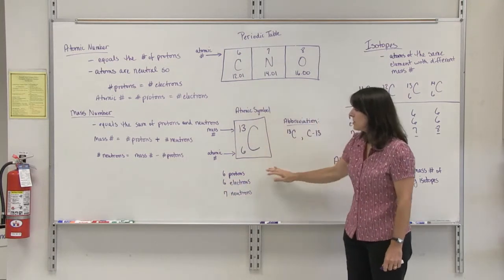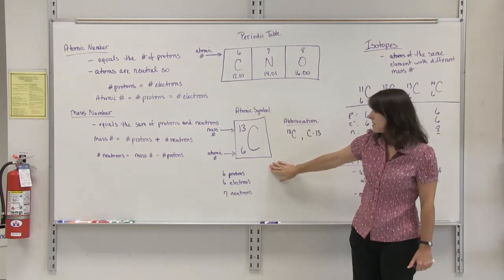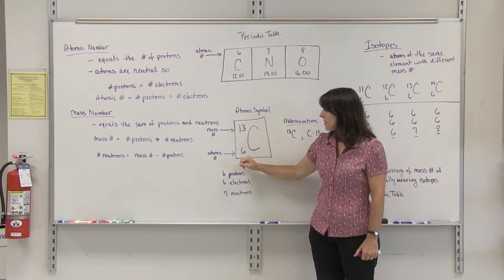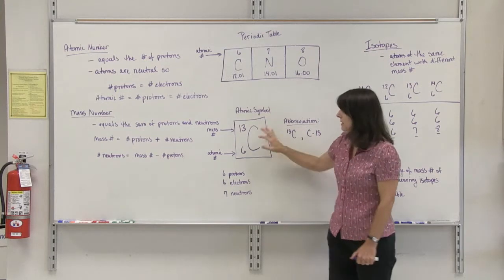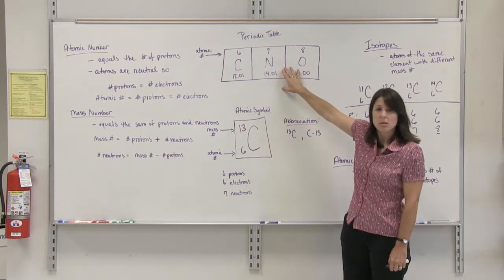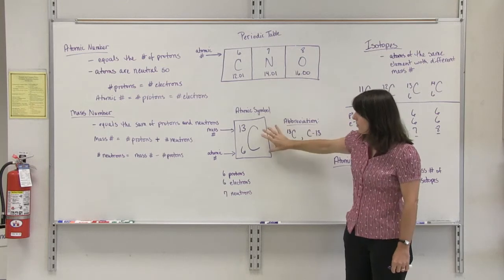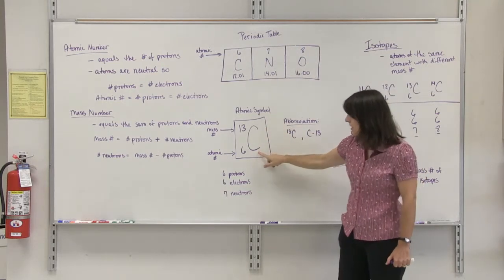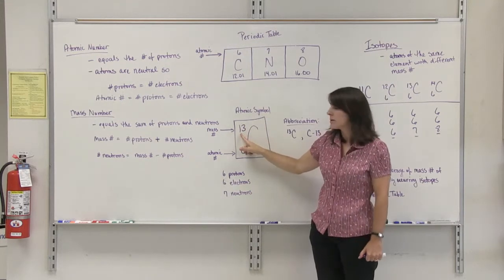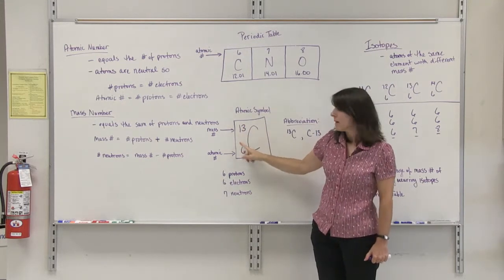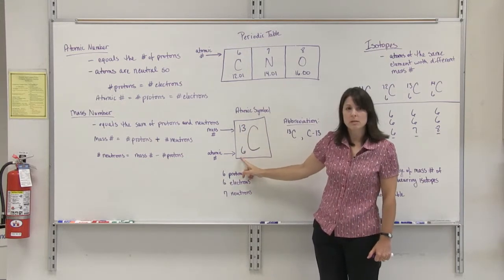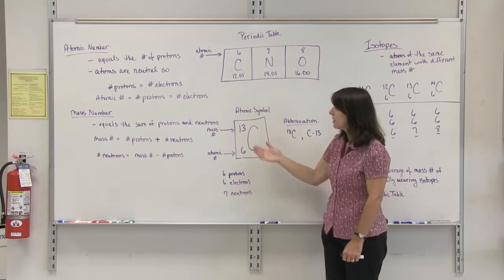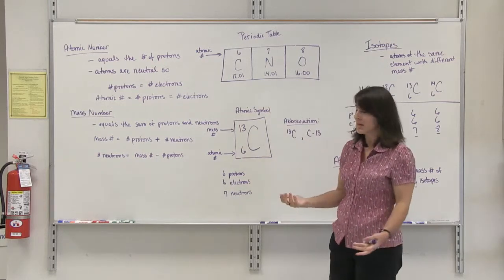An atomic symbol is used to represent a specific atom. It gives you both the mass number and the atomic number. It is set up differently than the symbols on the periodic table. For the atomic symbol, the symbol of the element is written, then the mass number is written as a superscript, and the atomic number is written as a subscript. Generally, the mass number is larger than the atomic number; however, there are cases when they are the same.